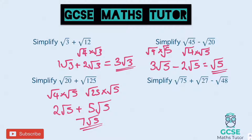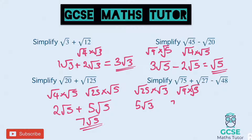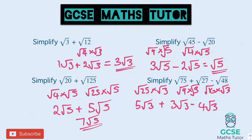The final practice question has three to simplify: root 75 is root 25 times root 3, which is 5 root 3. Root 27 is root 9 times root 3, which is 3 root 3. Root 48 - the key is spotting 16 - is root 16 times root 3, which is 4 root 3. Adding the first two and subtracting the last: 5 plus 3 is 8, so 8 root 3 take away 4 root 3 leaves 4 root 3.